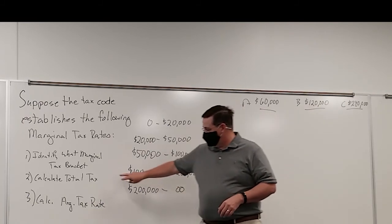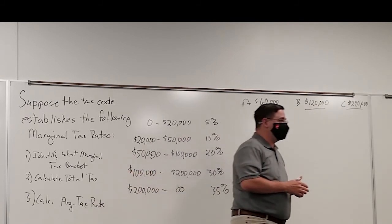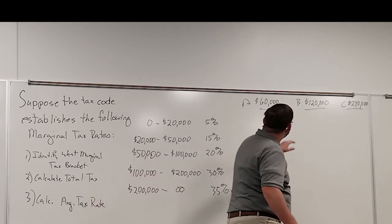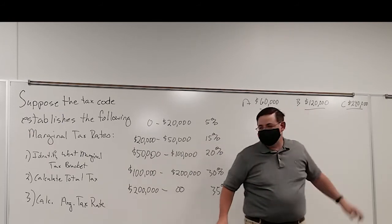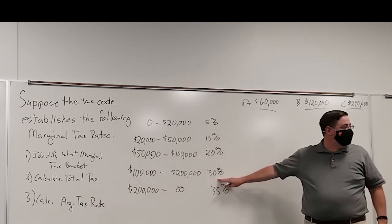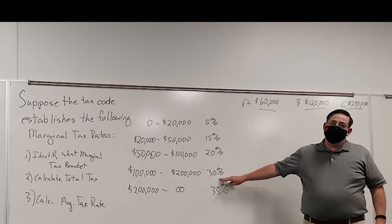The second part is to calculate our total tax. This is more complicated. Why? Because we don't just tax the entire $120,000 at 30%. That's not how it works.